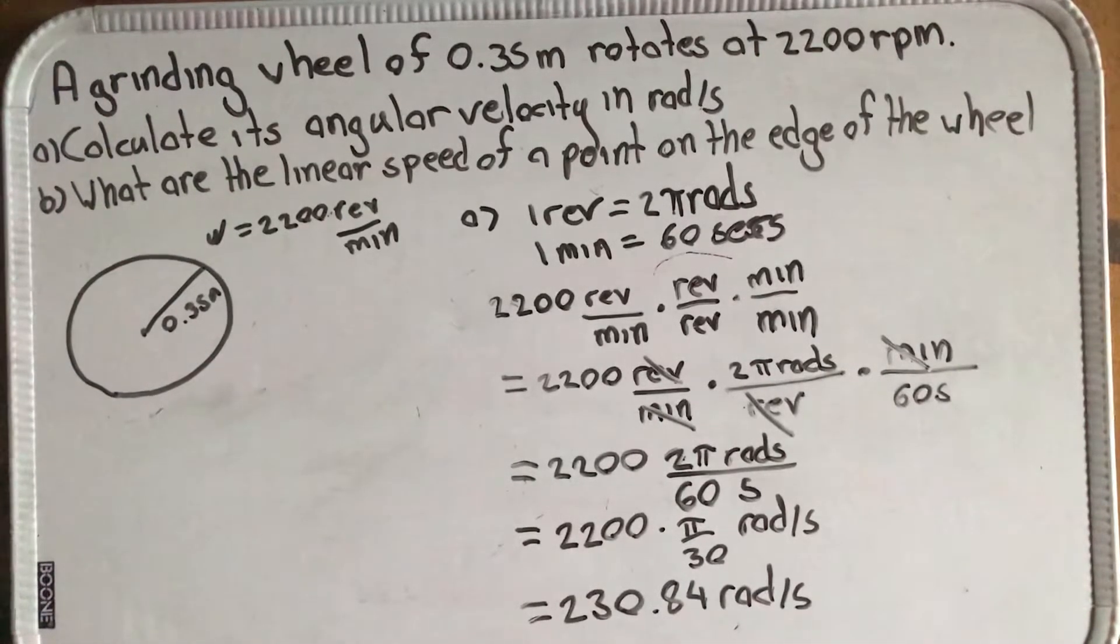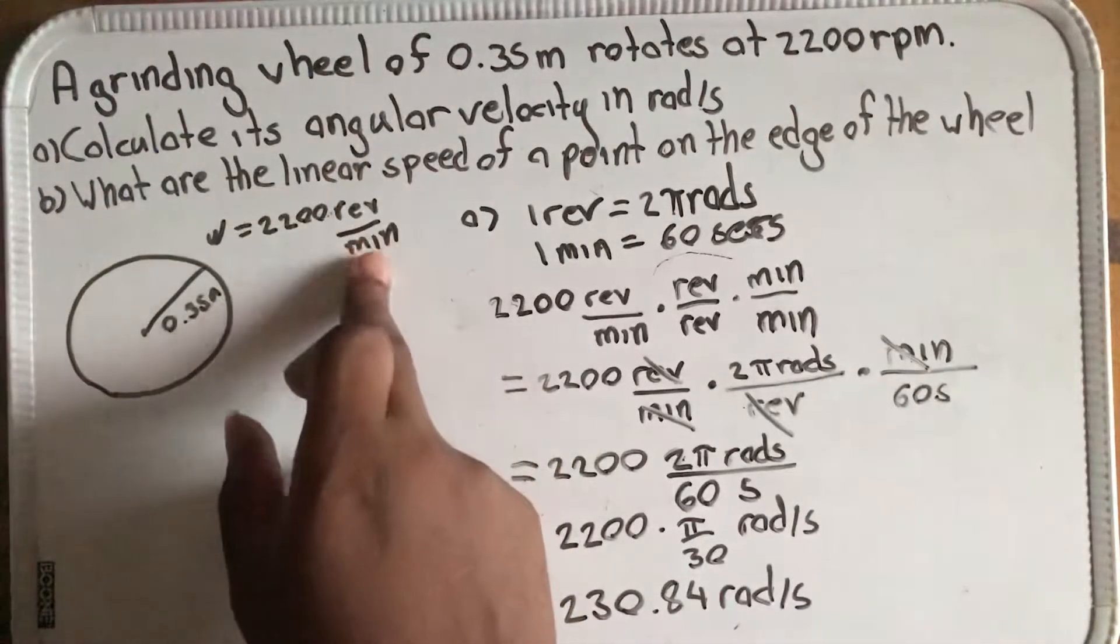Hey guys, so in our last video we found the angular velocity of this grinding wheel in radians per second. And I actually made a mistake. I said a grinding wheel of 3.5 meters.